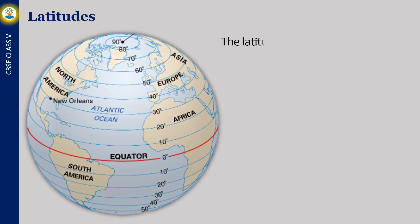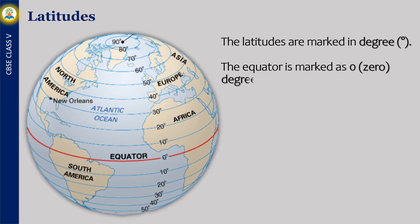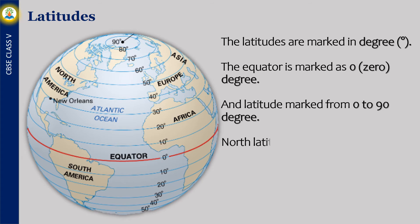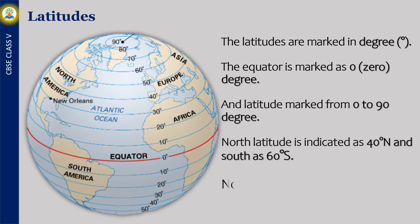The latitudes are marked in degrees. The equator is marked as zero degrees. Latitudes are marked from zero to ninety degrees. North latitude is indicated as, for example, 40 degrees north, and south latitude as 60 degrees south. The north pole is 90 degrees north and the south pole is 90 degrees south.